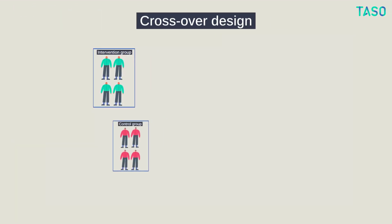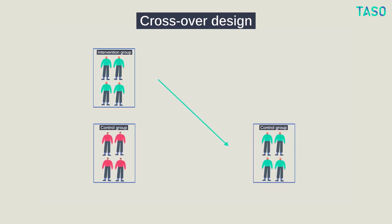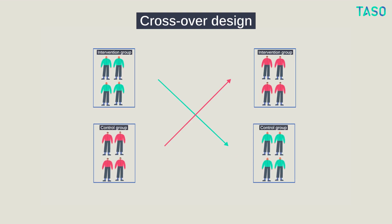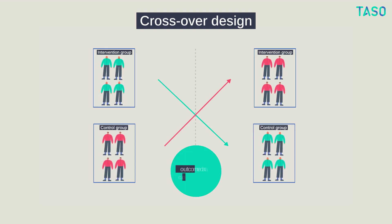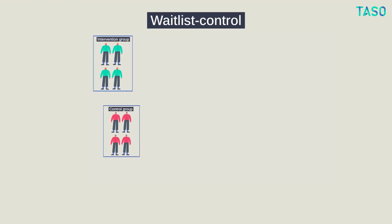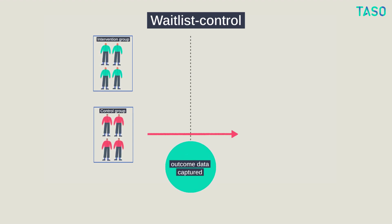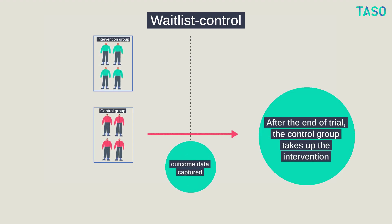Another type of RCT, called a crossover design, addresses an ethical concern that it is unfair for control groups to not have access to the intervention being evaluated. In crossover designs, control and intervention groups swap over midway through the trial after a first set of outcome data has been captured. Another way to address this ethical concern is to offer the control group the opportunity to take up the intervention after the end of the trial, in what is called a waitlist control.